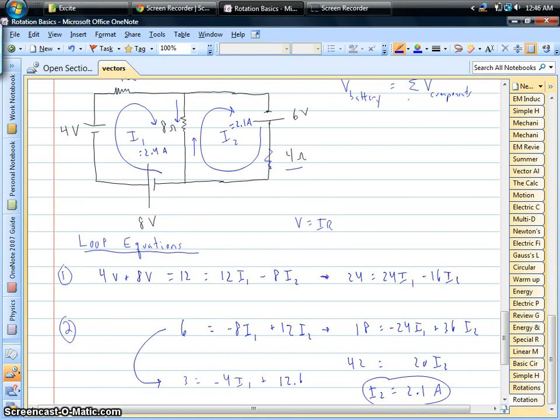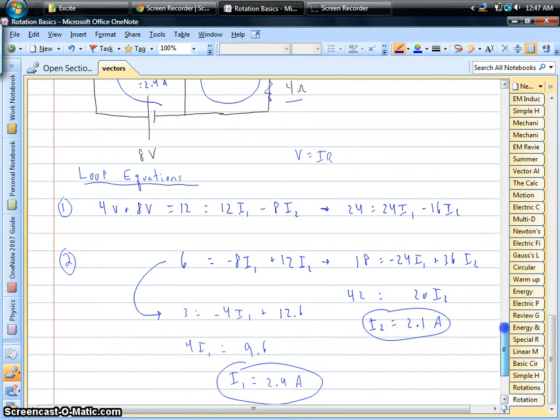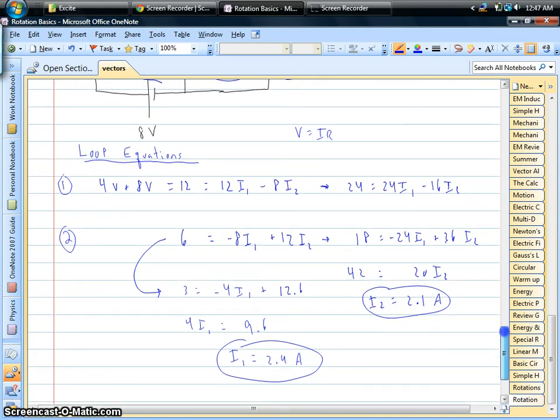Now, through the 8-ohms we've got 2.4 amps going down and we've got 2.1 going up. So that means coming down this shared branch is 0.3 amps going through the 8-ohm resistor. So we now know what the currents are in all the different sections of that particular multi-loop circuit.